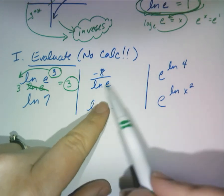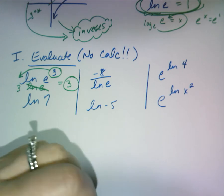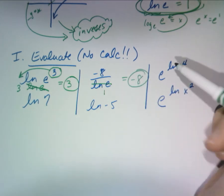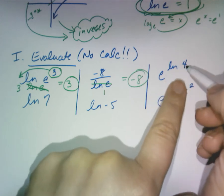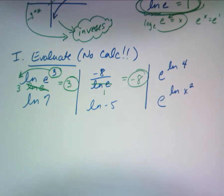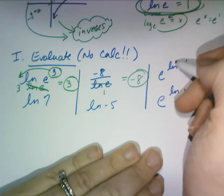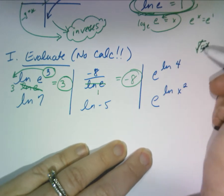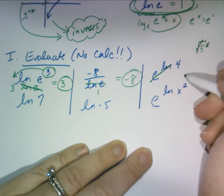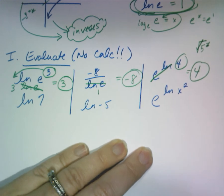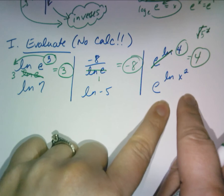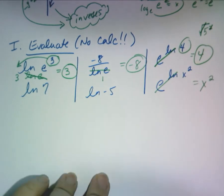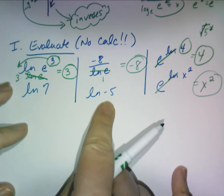What about negative 8 over ln(e)? That cancels to 1, so it's just negative 8. Now what if I e the ln of 4? E and ln are inverses — they cancel each other out, just like the square root of five squared. You're left with 4. So e to the ln of x squared would just be x squared — the e and ln cancel.